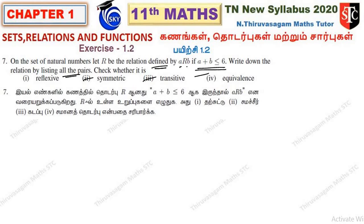So if a plus b less than or equal to 6, the natural numbers are 1, 2, 3, 4, 5, 6, 7, and so on. The condition is a plus b less than or equal to 6.